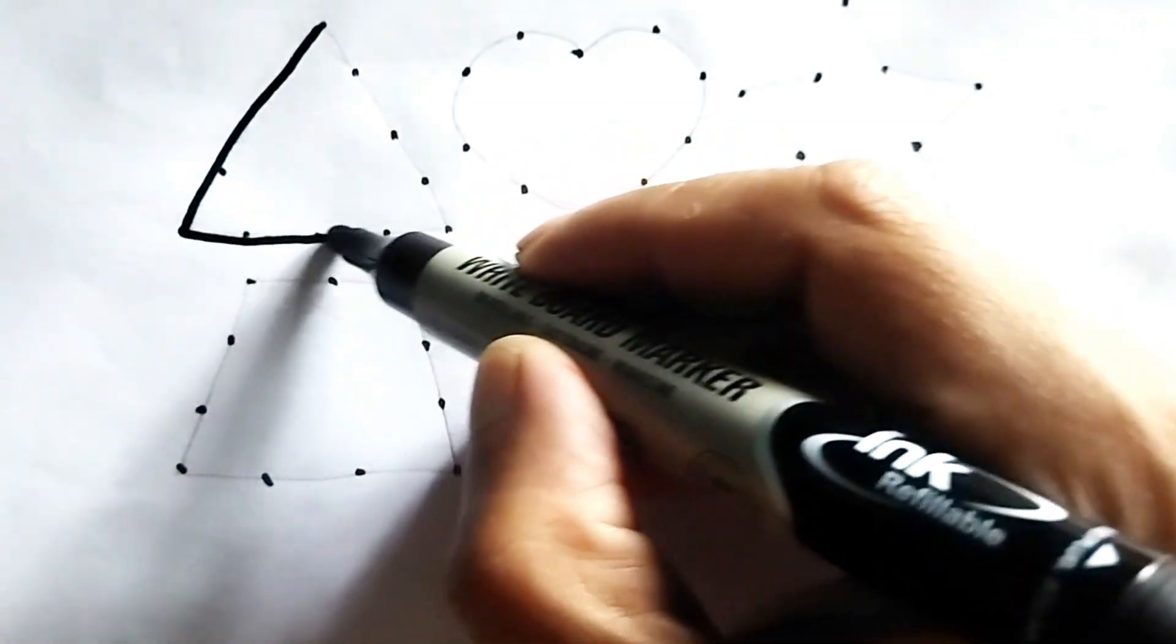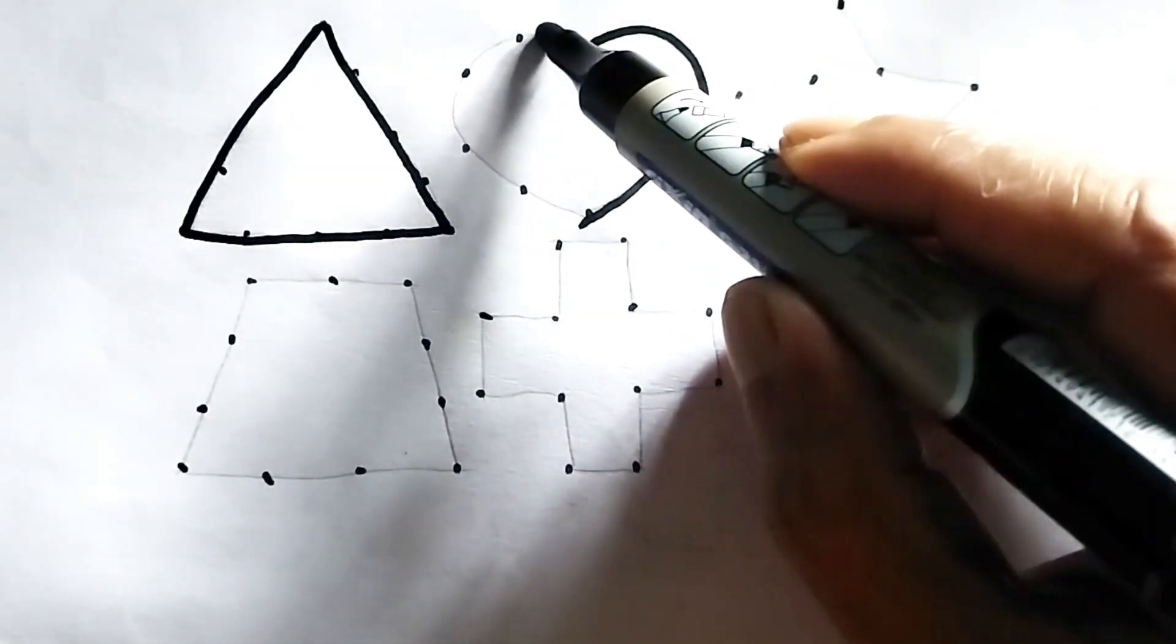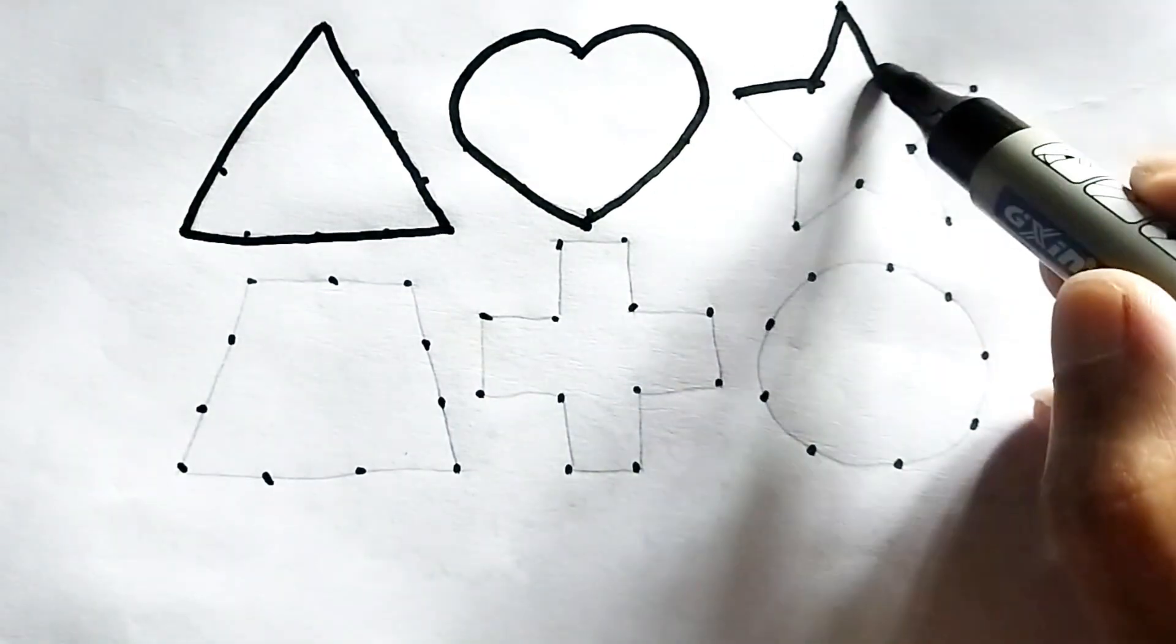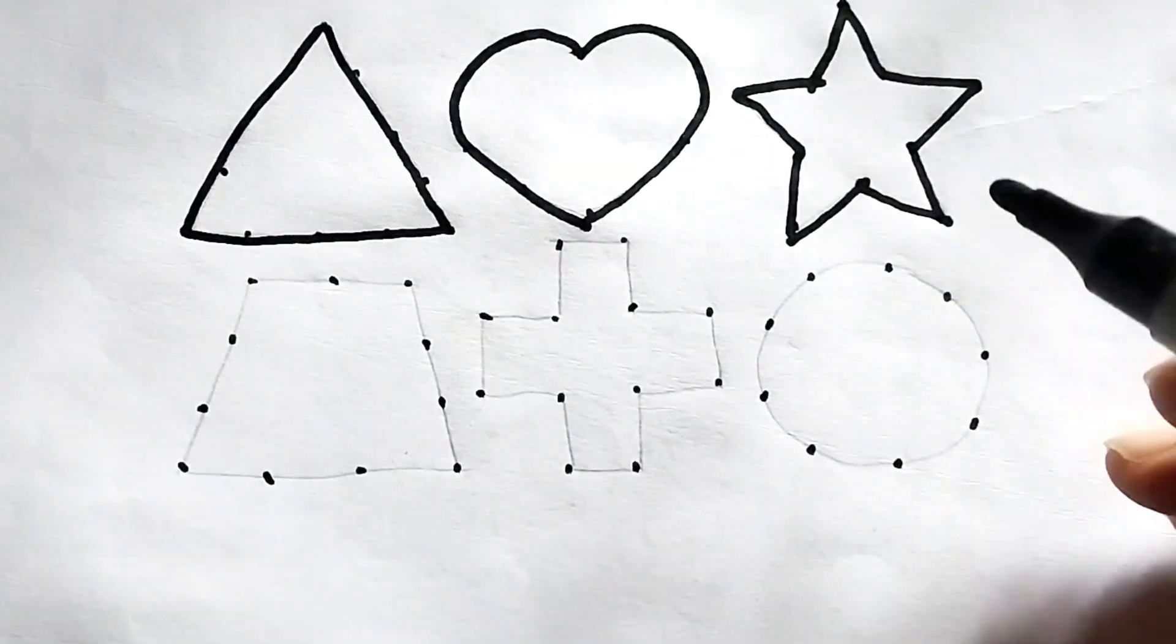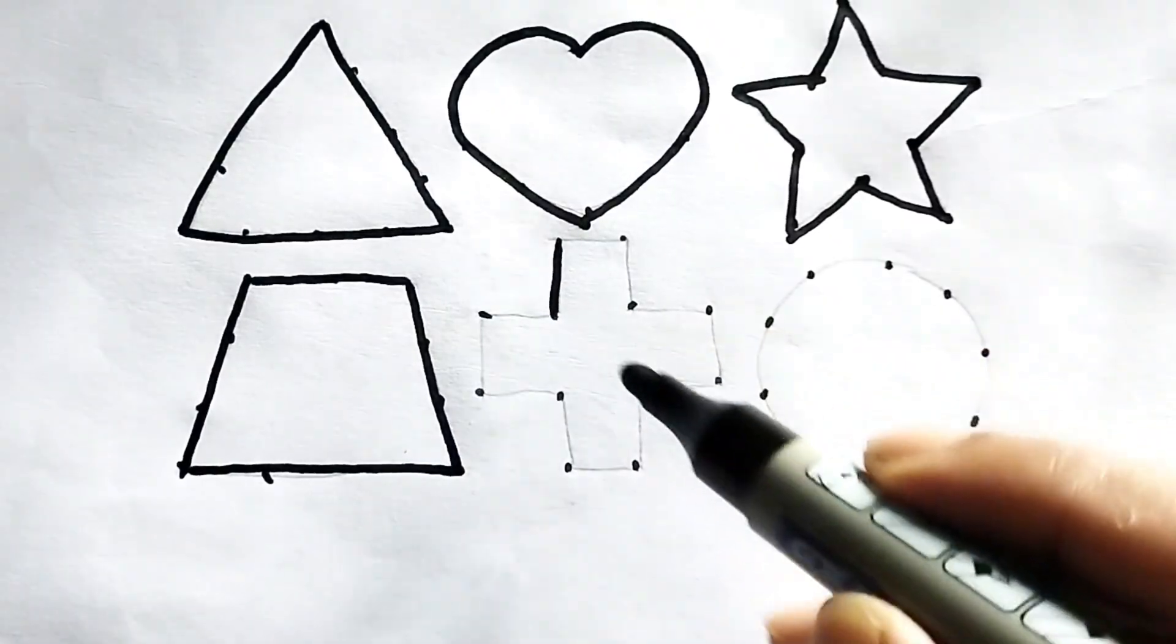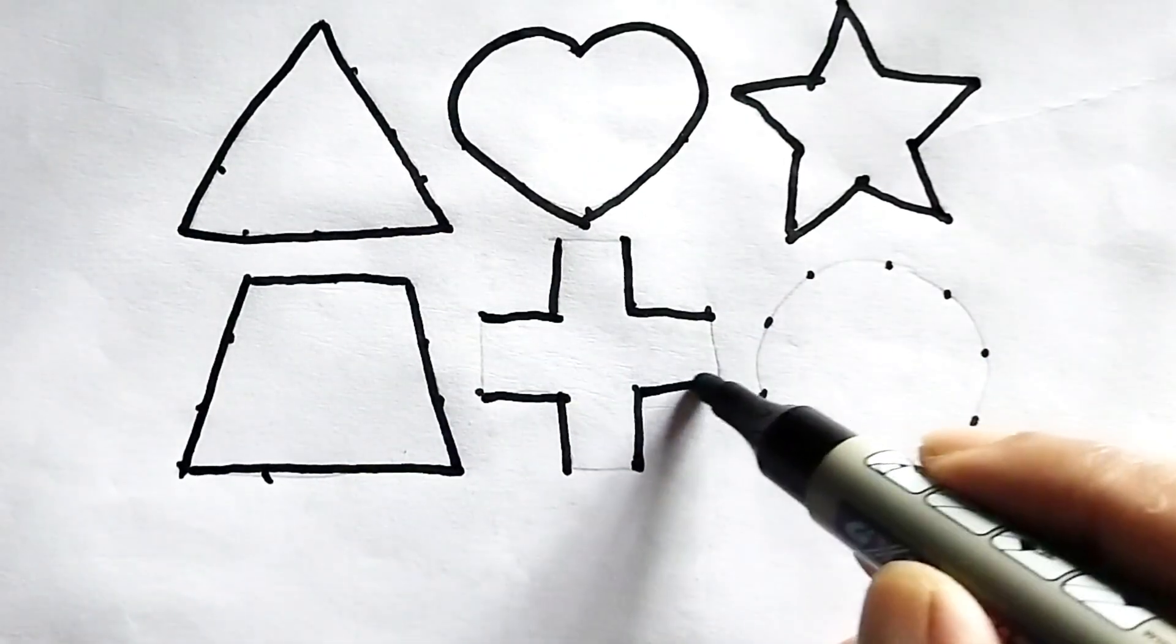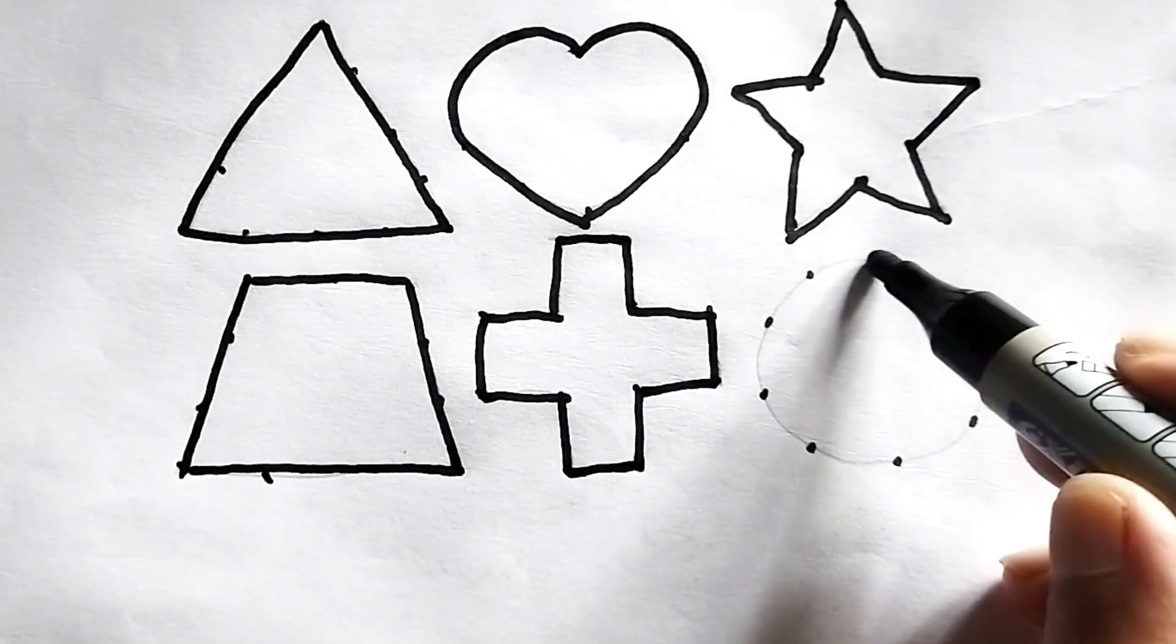This is triangle: one, two, three. Triangle. Heart shape: one, two, three, four, five, six, seven, eight, nine, ten. Star: one, two, three, four. Trapezoid: one, two, three, four, five, six, seven, eight, nine, ten, eleven, twelve. Cross.